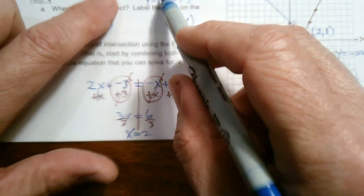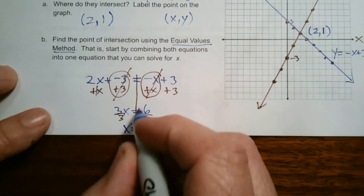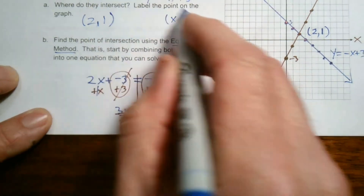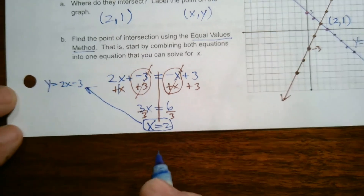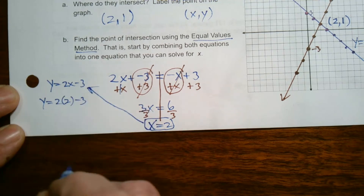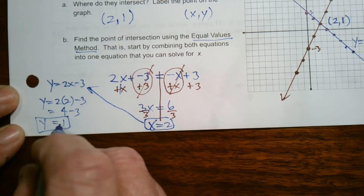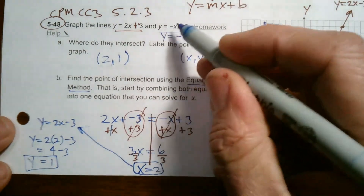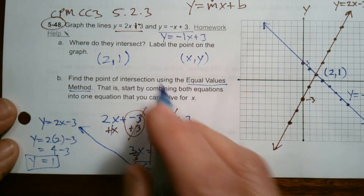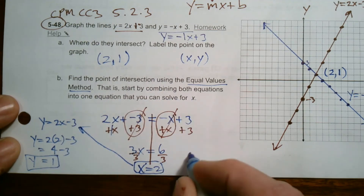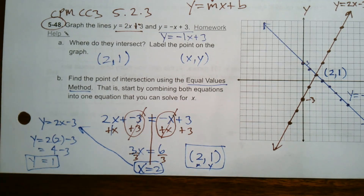X equals 2 confirms our intersection point. To find the Y value, I plug x equals 2 back into one of the equations: y equals 2 times 2 minus 3, which is 4 minus 3, which is 1. I could also use the other equation: negative 2 plus 3 also equals 1. Either way, y equals 1. So the intersection point is (2, 1), written as an ordered pair with x and y.